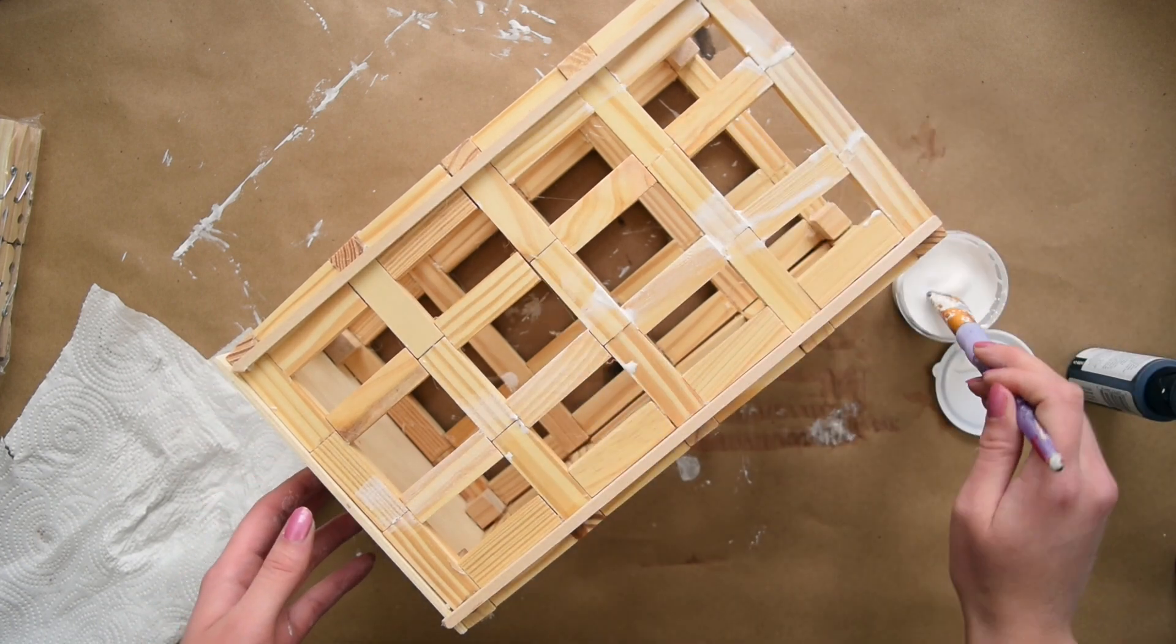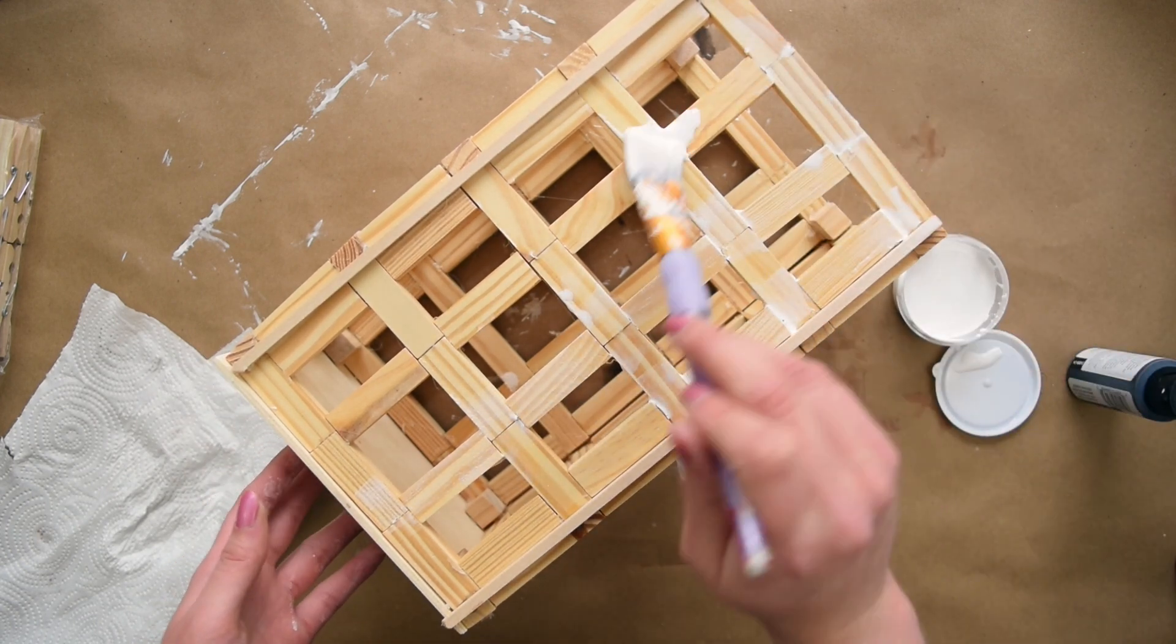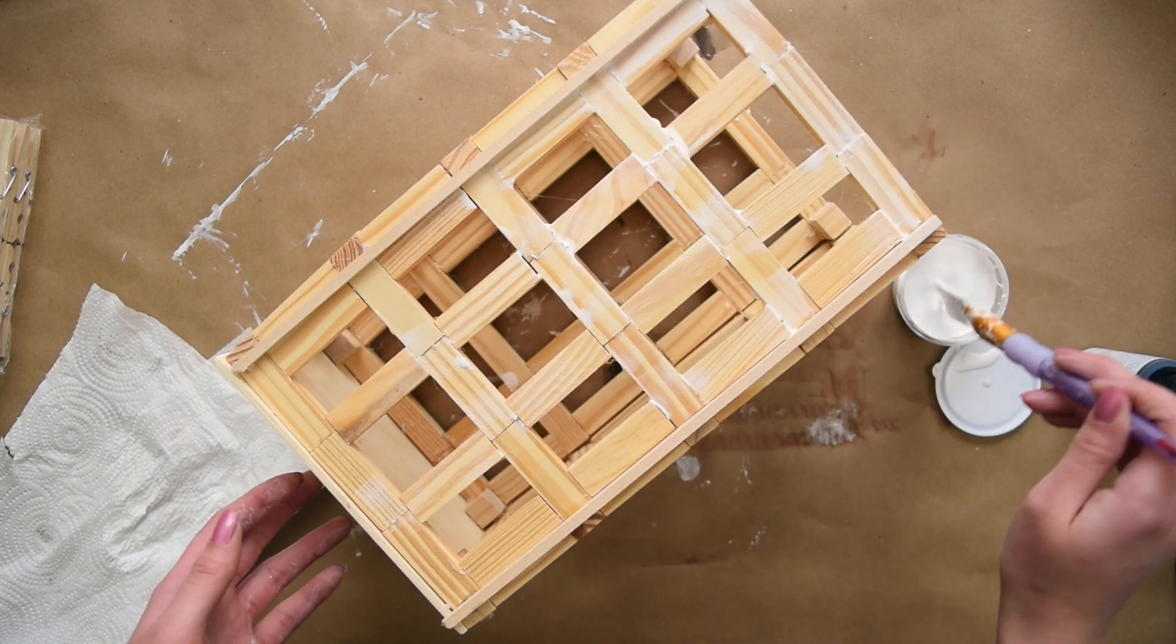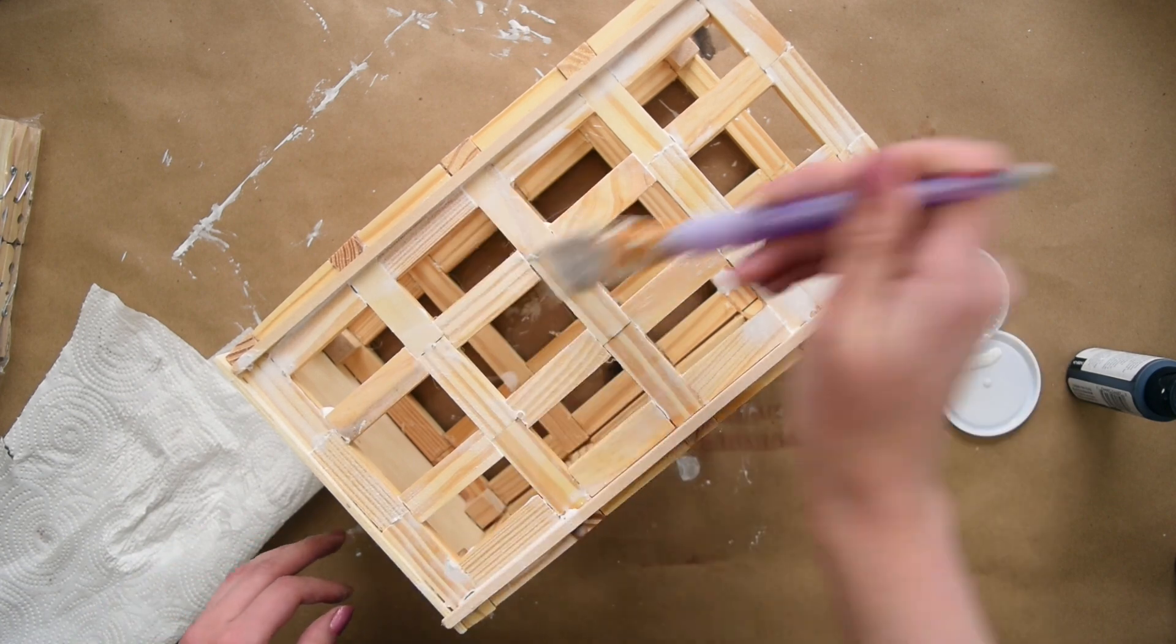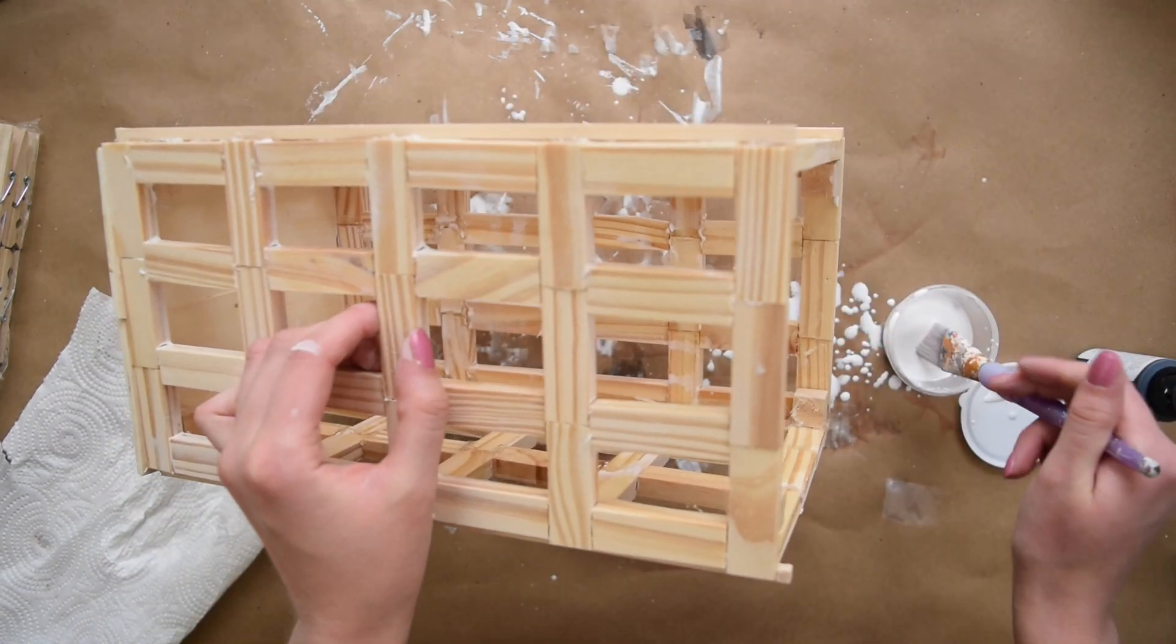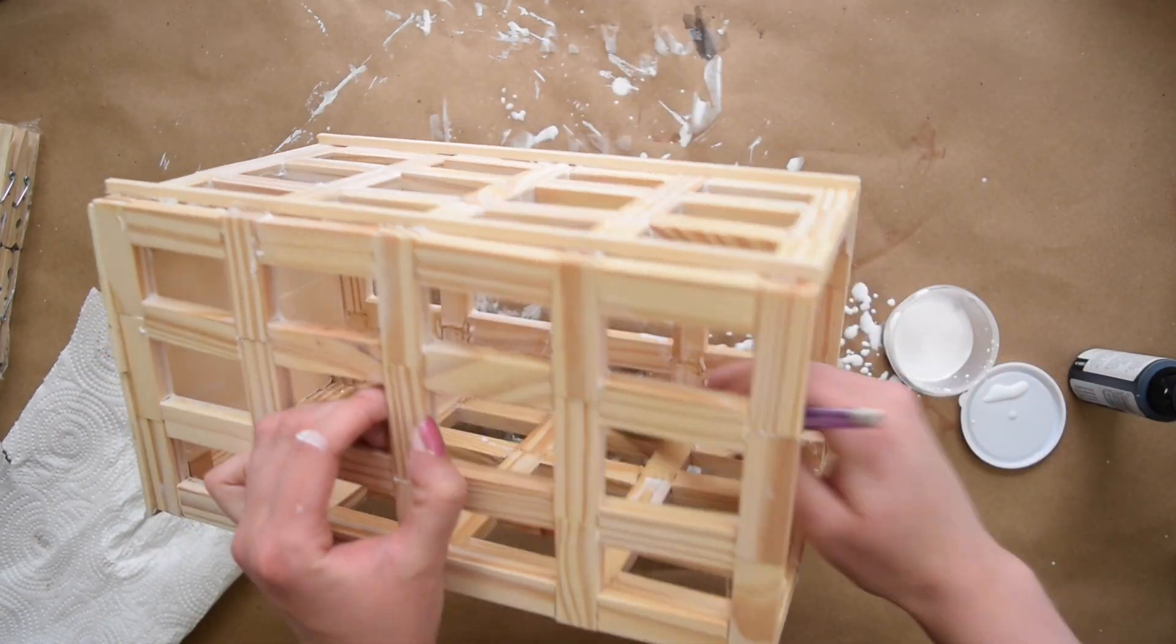Next because I wasn't a huge fan of just this natural wood color I decided to give it a white wash by watering down some acrylic paint and it did take about two coats of the white wash to get the color I wanted and I also did make sure to white wash the blocks from the inside as well.